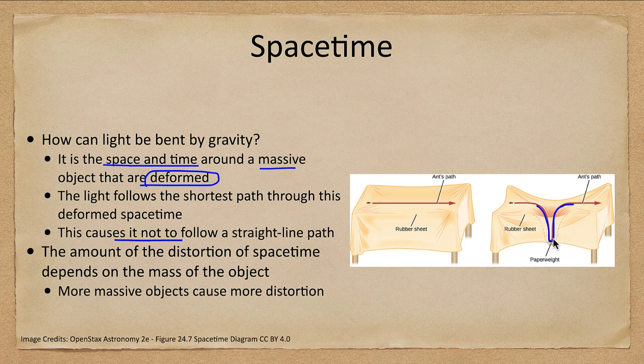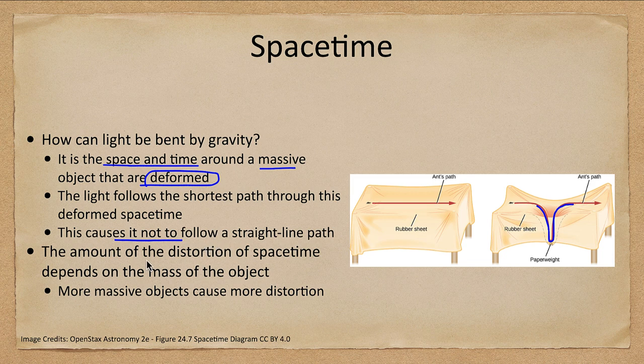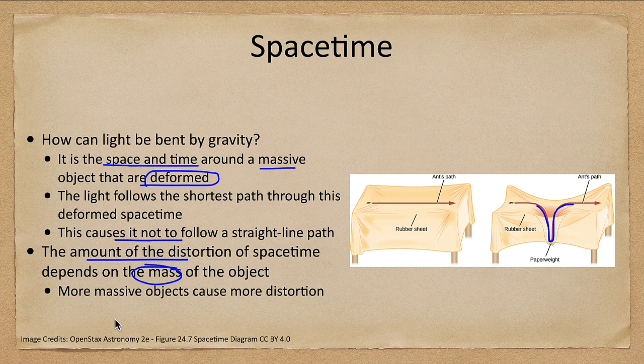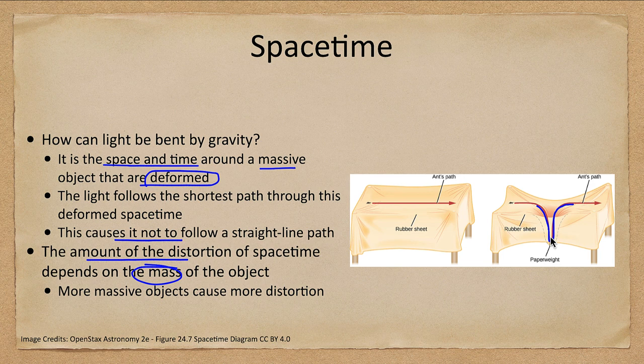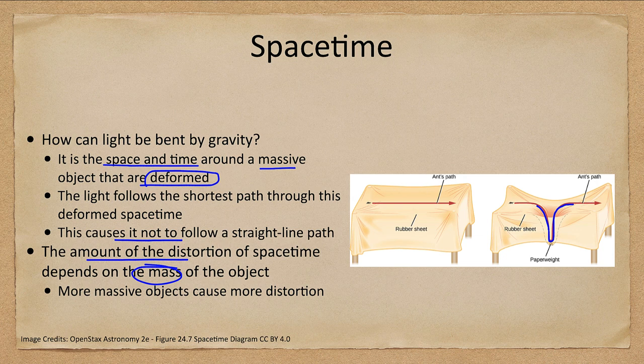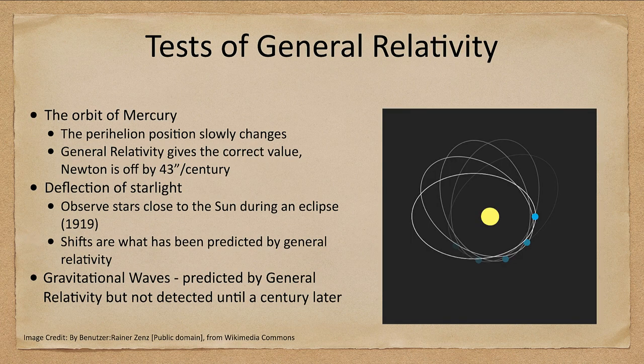How much of this distortion occurs depends on the mass. The more massive object will cause more distortion. If you put a very small object there, the distortion would be much less. If you put a very massive object there, the distortion would be much more. So we will see this distortion in space when we look at much more massive objects.